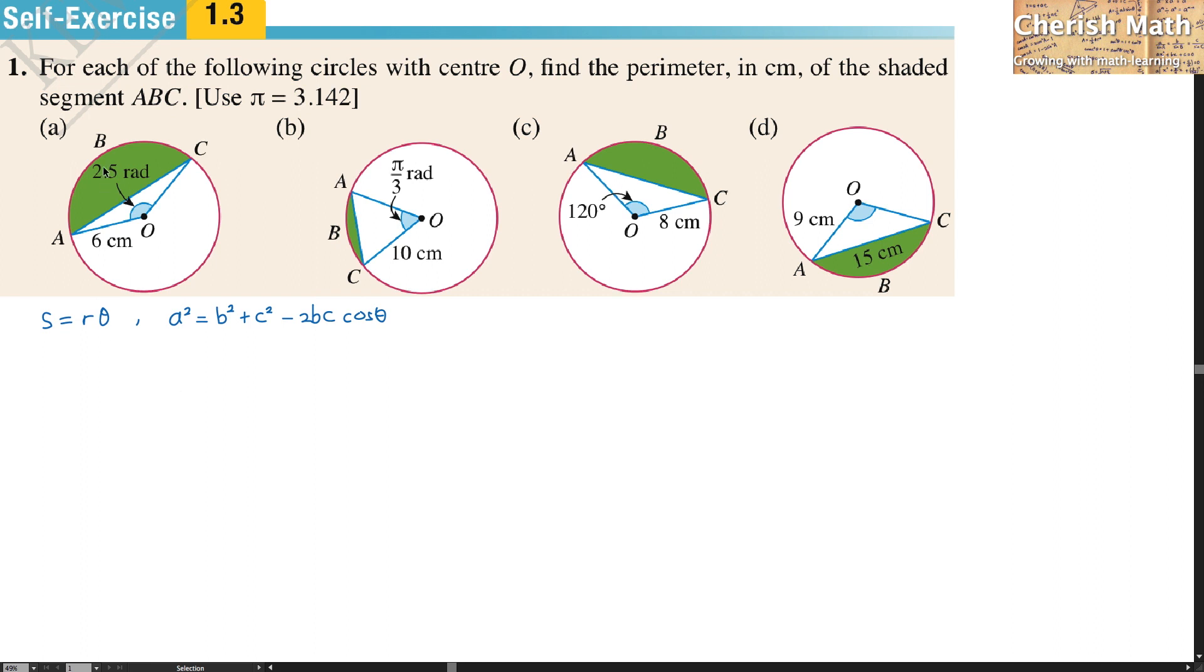To solve the question for part A, I will have to find what is the value of the arc ABC by using 6 cm which is the radius multiplied with this 2.5 radians which is the angle given. So I will be getting the answer 15 cm.